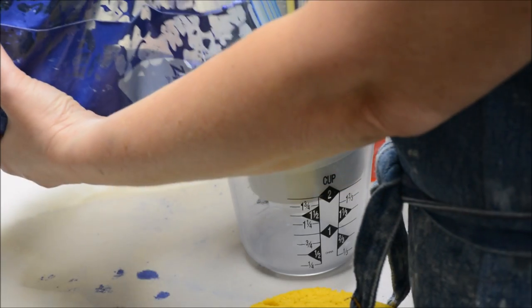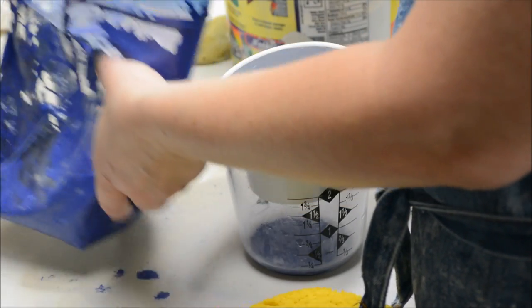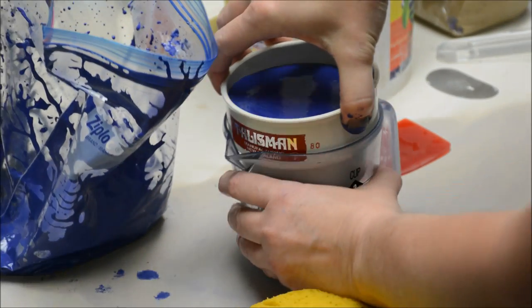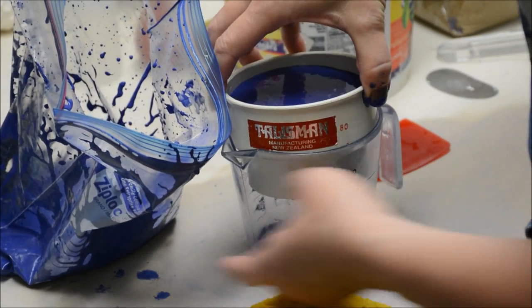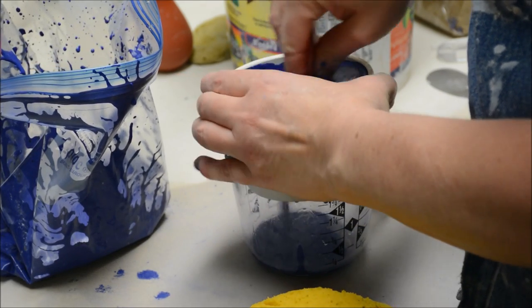Now that I have my stain incorporated into this slip, I am now going to run it through a sieve. And this is a small talisman sieve. I just happen to be using an 80. If I had a 60 on hand, I probably would have grabbed that.